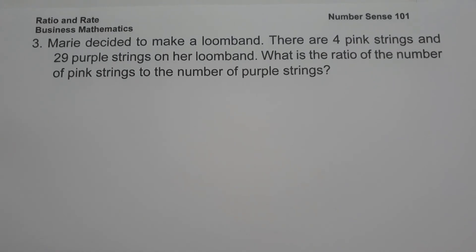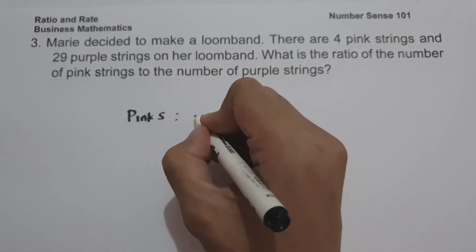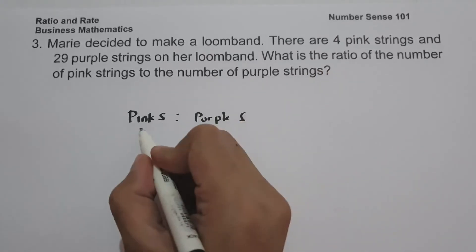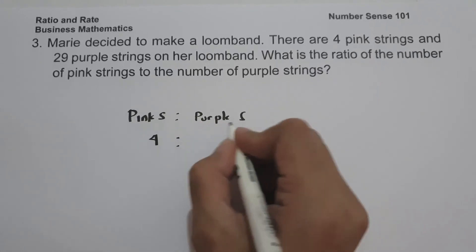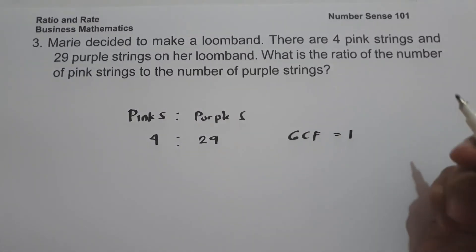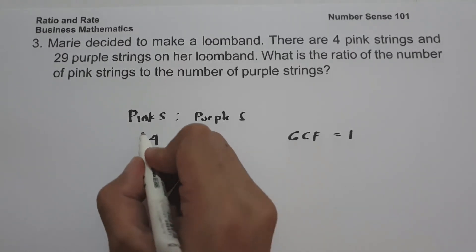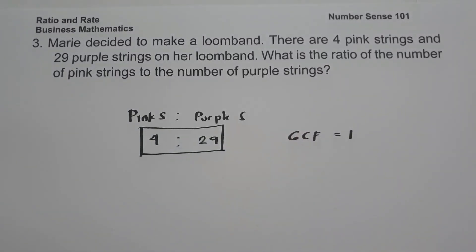On our last example, Marie decided to make a loomband. There are 4 pink strings and 29 purple strings. To find the ratio of pink strings to purple strings, we write 4 is to 29. The GCF of 4 and 29 is 1, so the ratio cannot be simplified further. Therefore the ratio of pink strings to purple strings is 4 is to 29. I hope you've learned from this video. Thank you so much for watching and God bless us all.